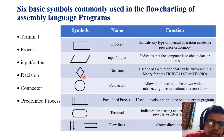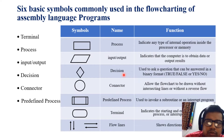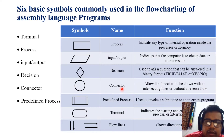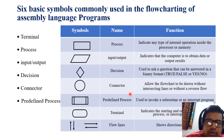The rhombus is a symbol used for decision — it is used to ask a question that can be answered in binary format: true or false. The connector symbol allows a flowchart to be drawn without intersecting lines or without any reverse flow.